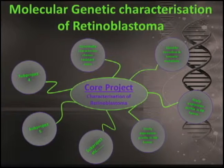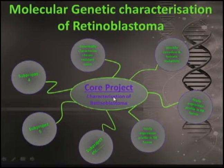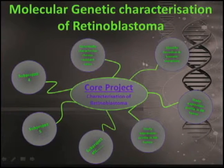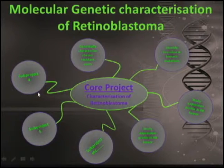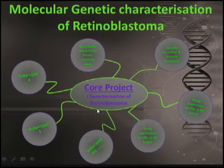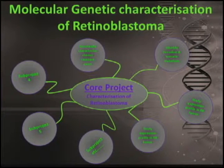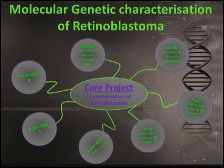This spider-shaped schematic shows that we have a core project from which we can study many things. From the retinoblastoma project we're studying mutation screening, expression profile, and genotype-phenotype correlation — and we're identifying more and more areas to investigate. So many projects can come out of this one idea. You don't just use genetics for one line of experiments; you can expand more and more. There are many such examples in ophthalmology.